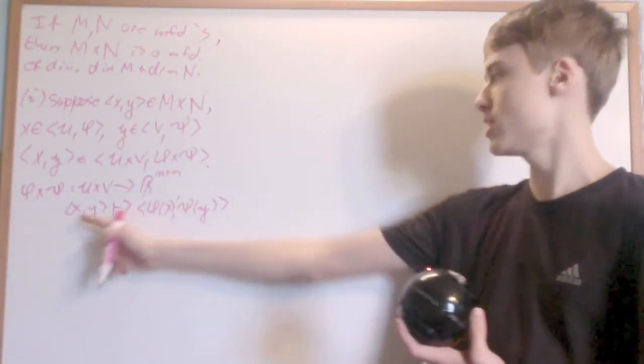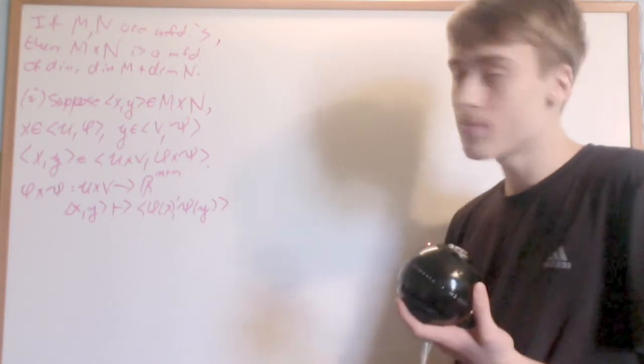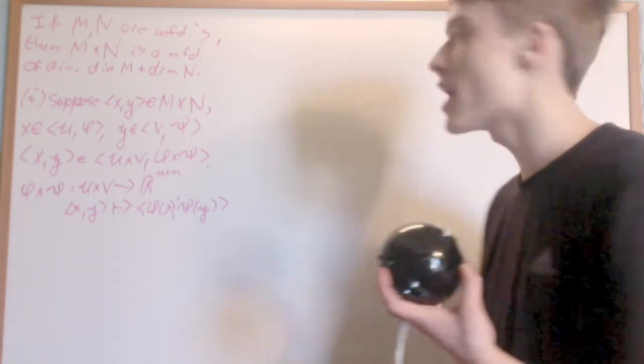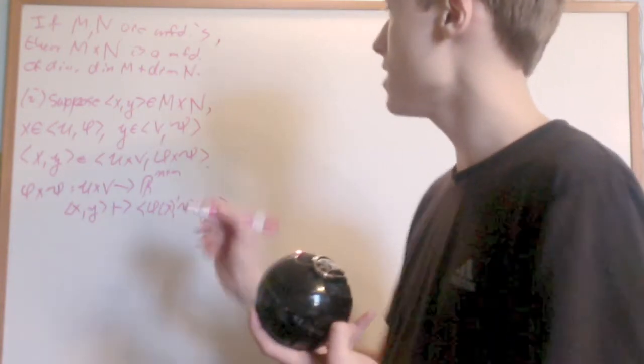It takes in X,Y and outputs phi of X, psi of Y, and it's very easily seen to be a homeomorphism. U cross V is just a basis element of the product topology, so that's obviously an open set. So that's the first condition: around any point you can find a chart.